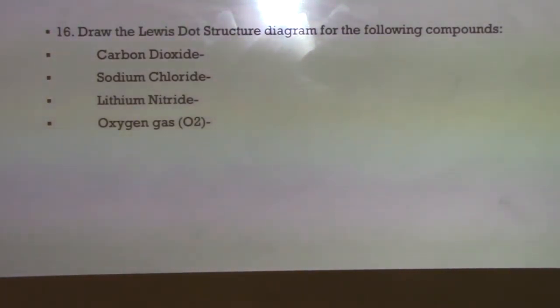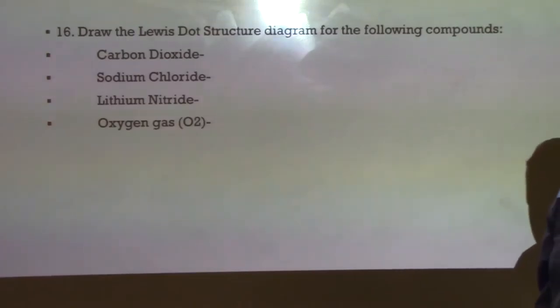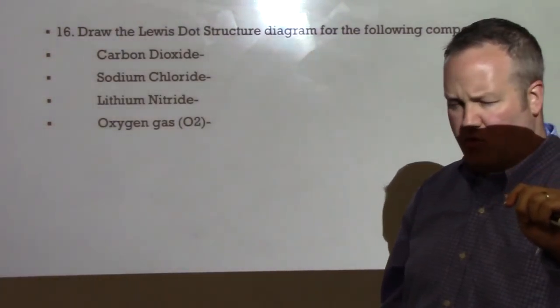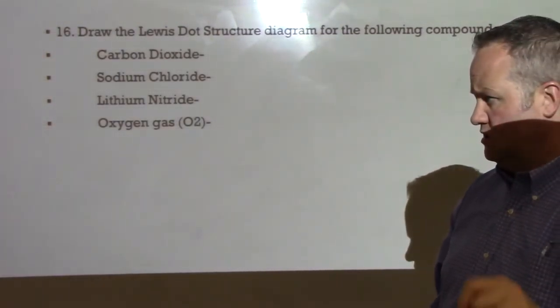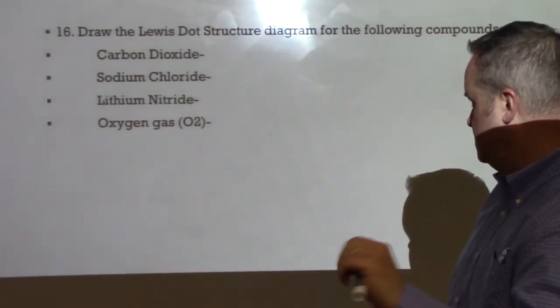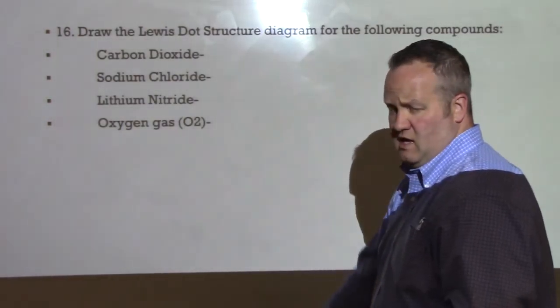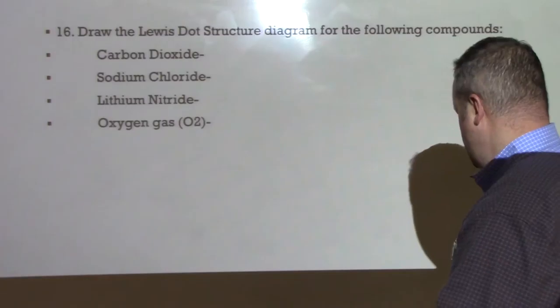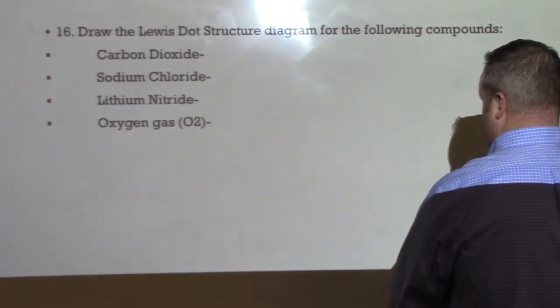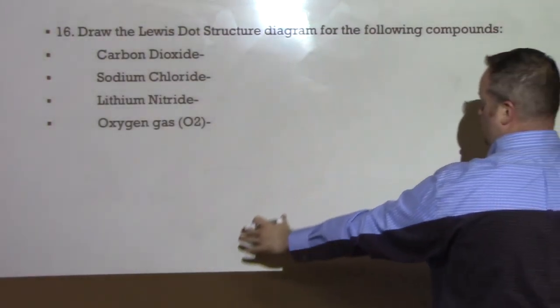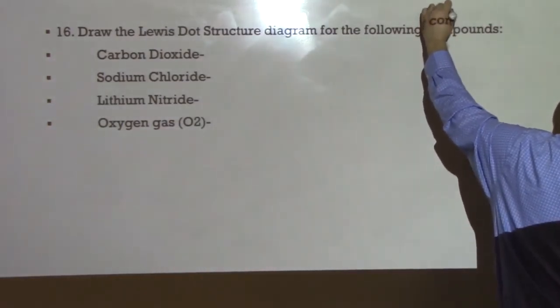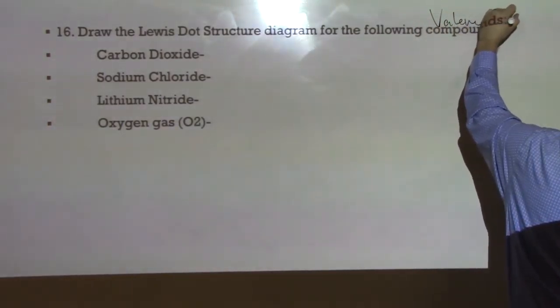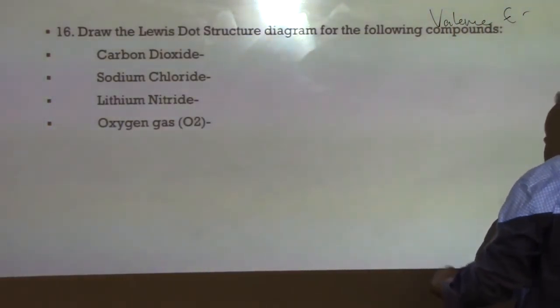Alright. Lewis dot structure diagram for the following compounds. Alright? So, what I'm going to do is, I'm actually going to draw one of these. But then I'm going to stop the video and I'm going to continue in part 2. So we're going to just draw one of these and then we'll finish the rest in another video we make for part 2.